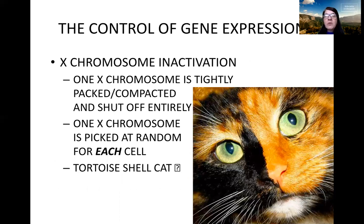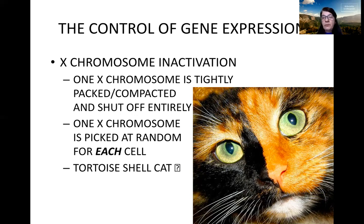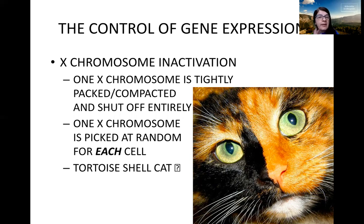X chromosome inactivation is a very interesting phenomenon. One of our X chromosomes, if you're biologically female, is always shut down — inactivated. But which one is inactivated is random. It happens early in development and is completely random. The best way to illustrate this is fur color in cats: it is encoded by a gene on the X chromosome. If you look at a tortoiseshell cat, you can literally see which cells have inactivated one X chromosome and which have inactivated the other.